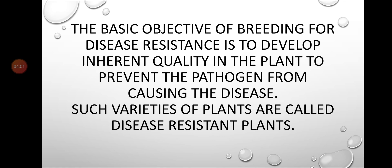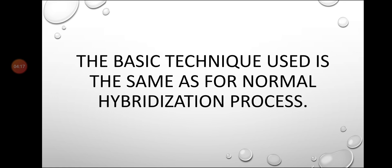Disease resistant plants will never be diseased again — they acquire resistance. The technique used for breeding disease resistant varieties is the same five-step hybridization process we have already studied. Using hybridization, several disease resistant plant varieties have been developed.